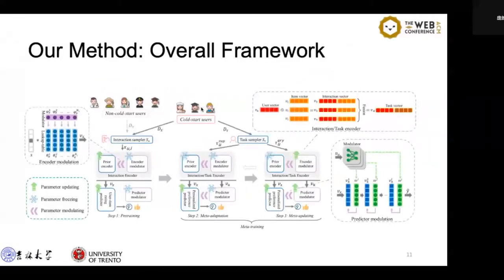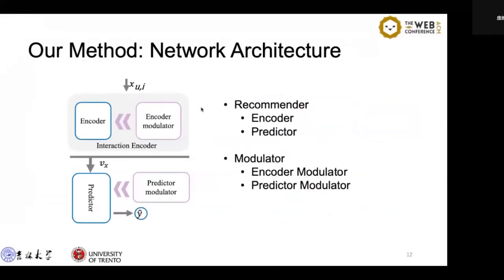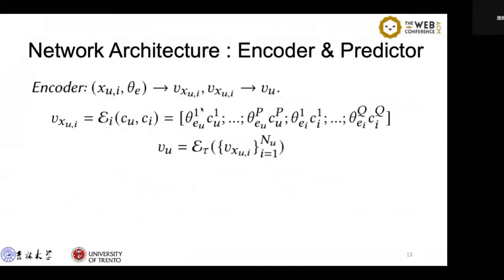This is the overall framework. I will introduce this model from the network architecture and optimization process. The network architecture is divided into a recommender consisting of an encoder and predictor, and two corresponding modulators. The encoder receives the feature vectors of users and items as input and converts all features into embedding vectors.